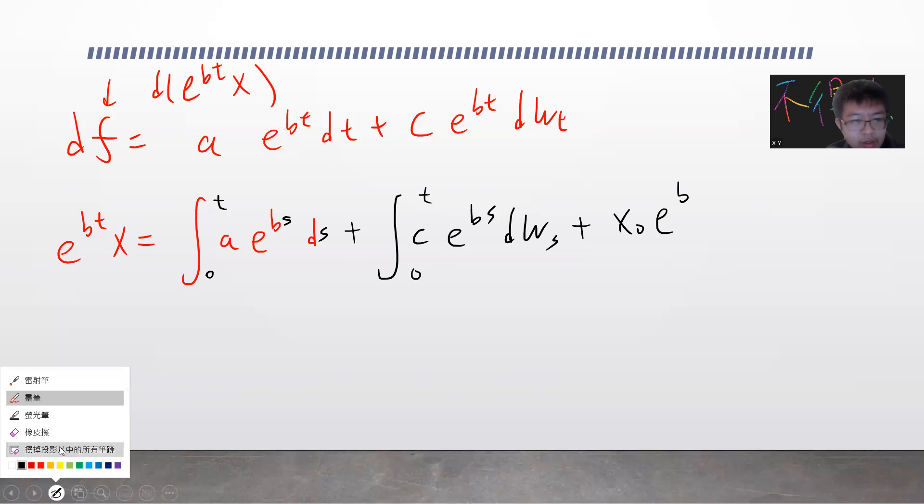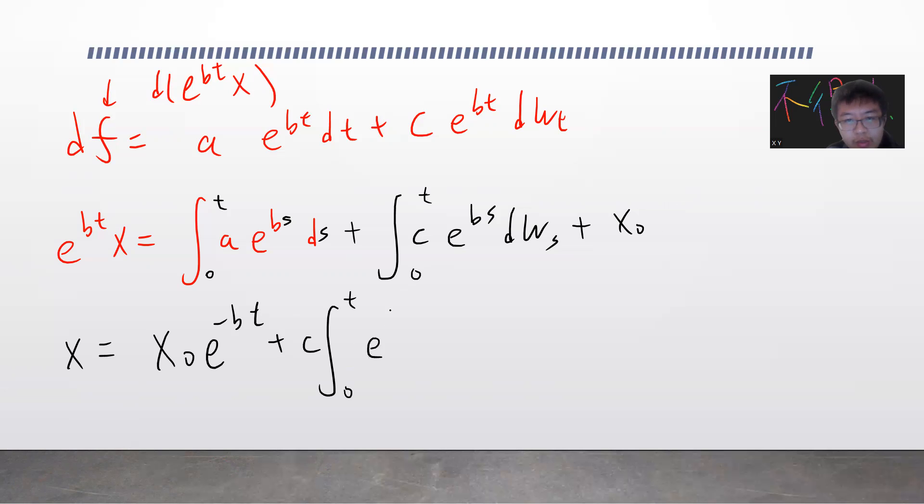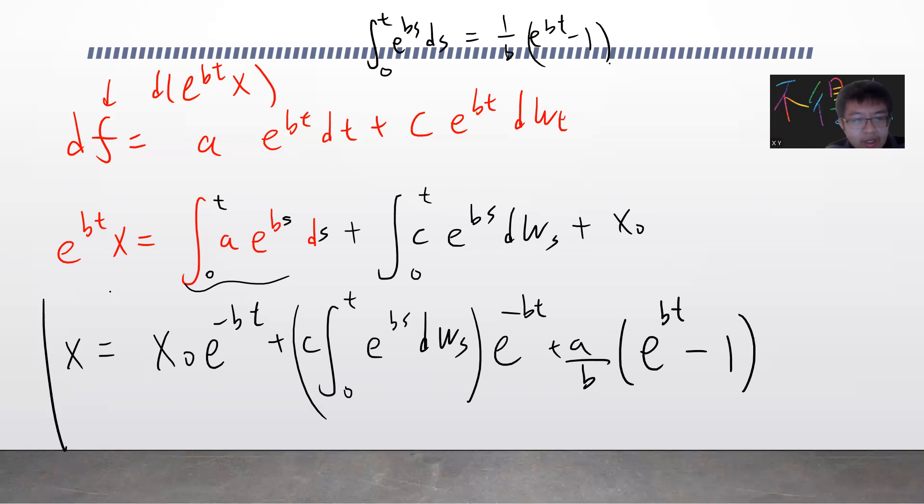Now we can solve for X to be X₀ e^(-bt) plus the integral from 0 to t of c e^(bs) dWs times e^(-bt). What about this term? This term is very simple: the integral of a e^(bs) ds from 0 to t is just a/b times (e^(bt) - 1).